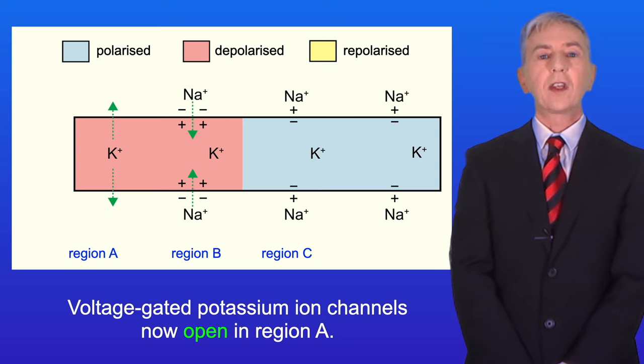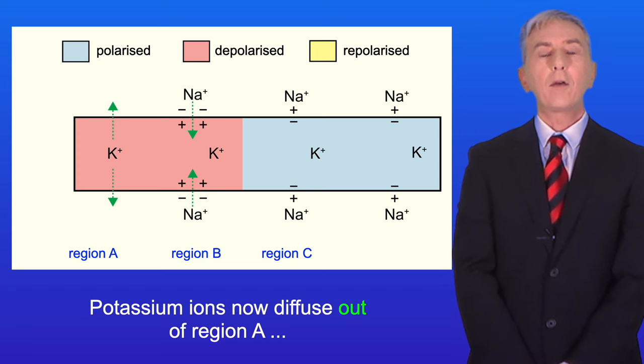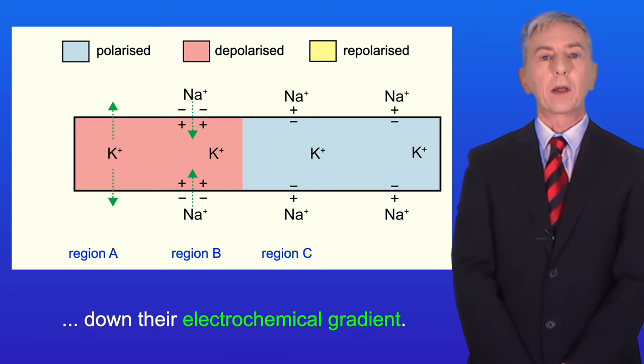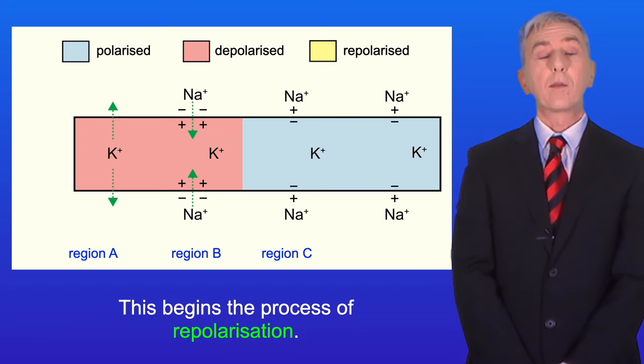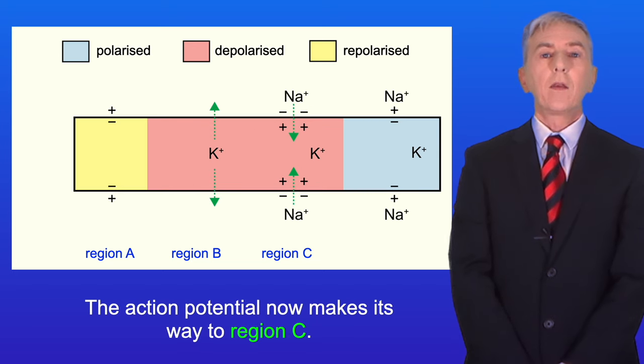Voltage-gated potassium ion channels now open in region A. Potassium ions now diffuse out of region A down their electrochemical gradient and this begins the process of repolarization. The action potential now makes its way to region C.